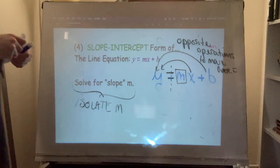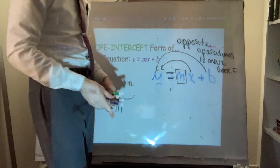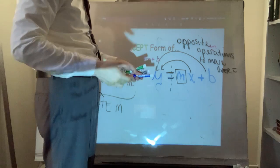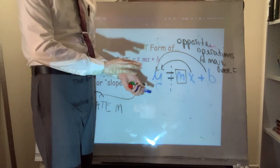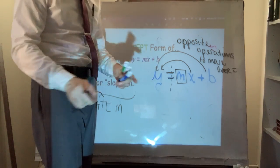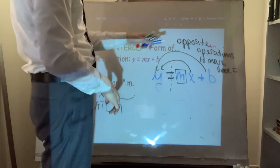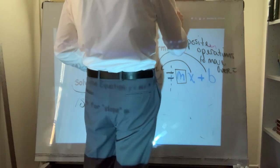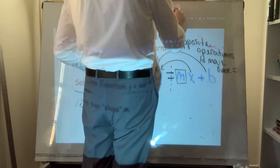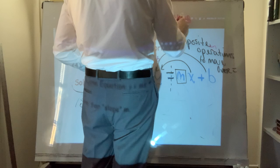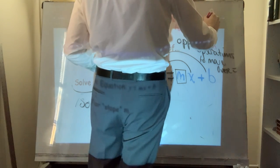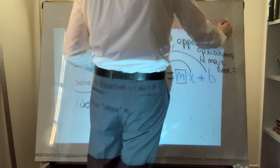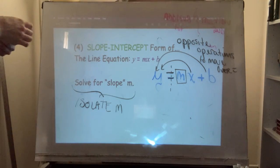Which do you do first? It's exactly the opposite of the order of operations. Normally in order of operations you do multiplication or division before addition and subtraction. When performing opposite operations, most of the time you end up doing the adding or subtracting first, then the multiplication or division second.